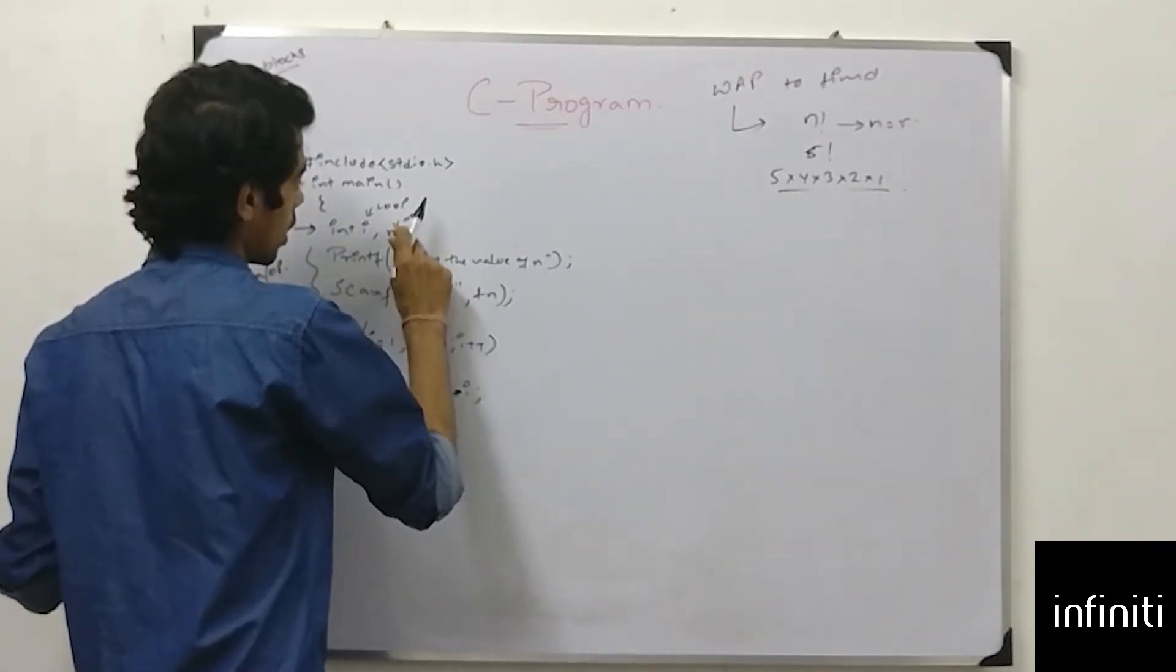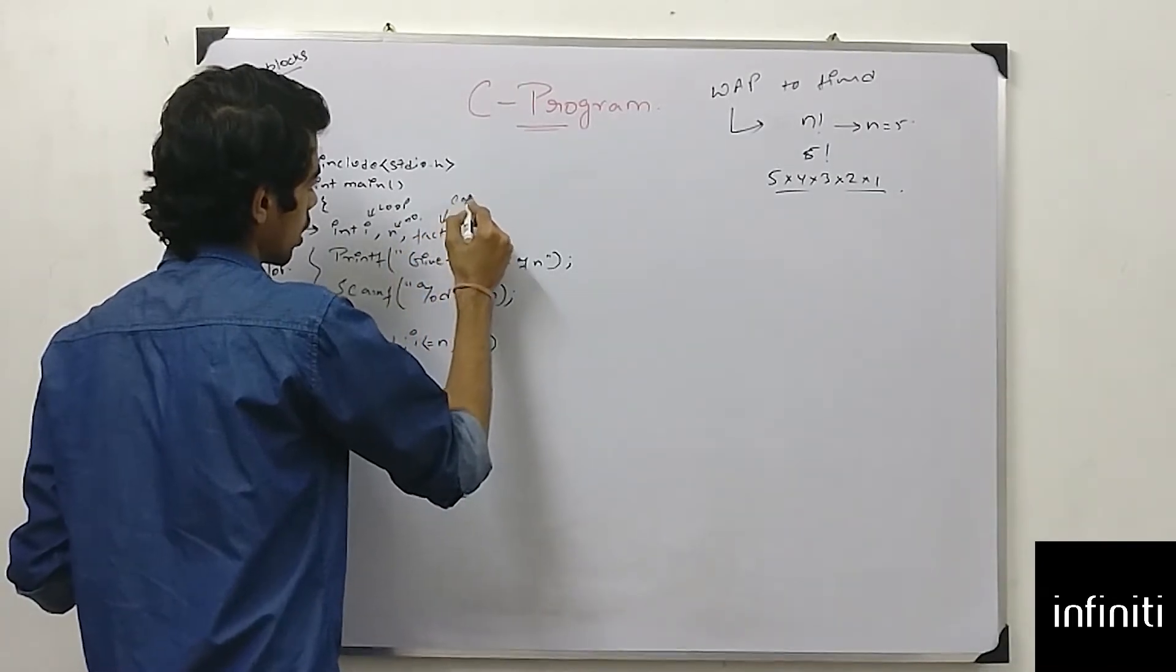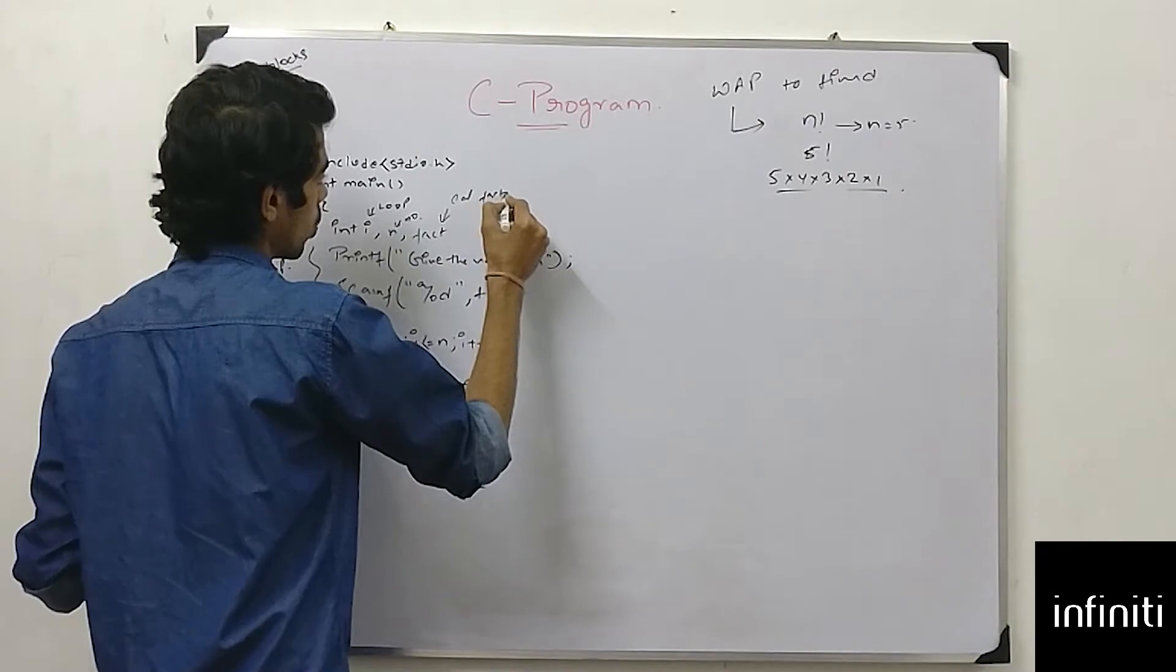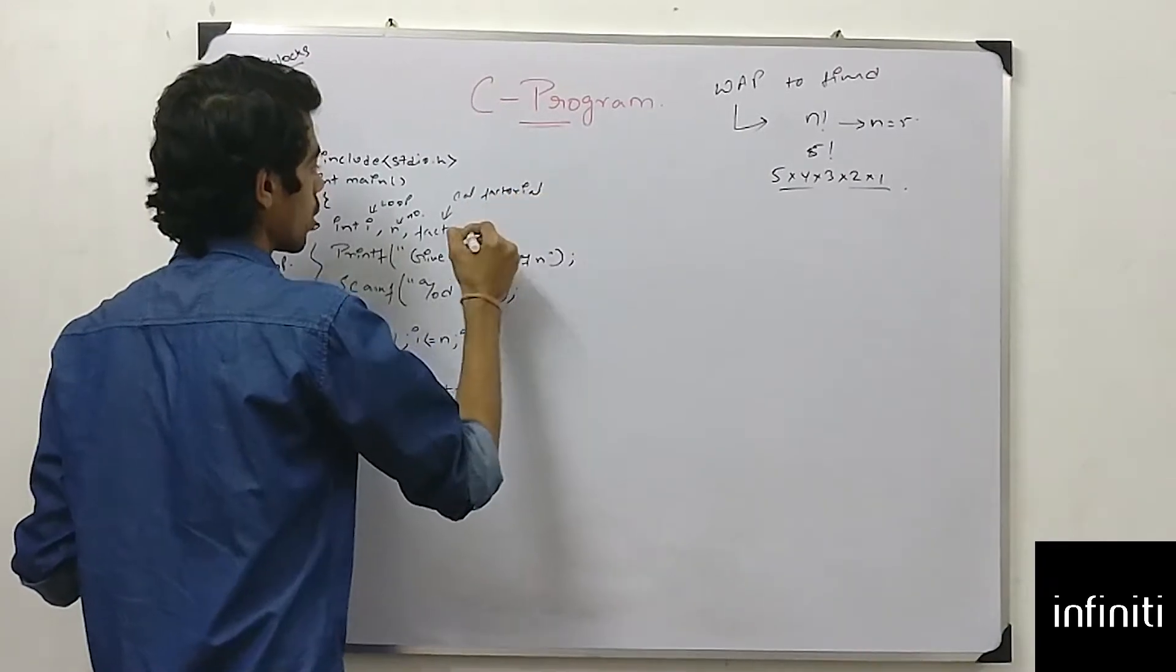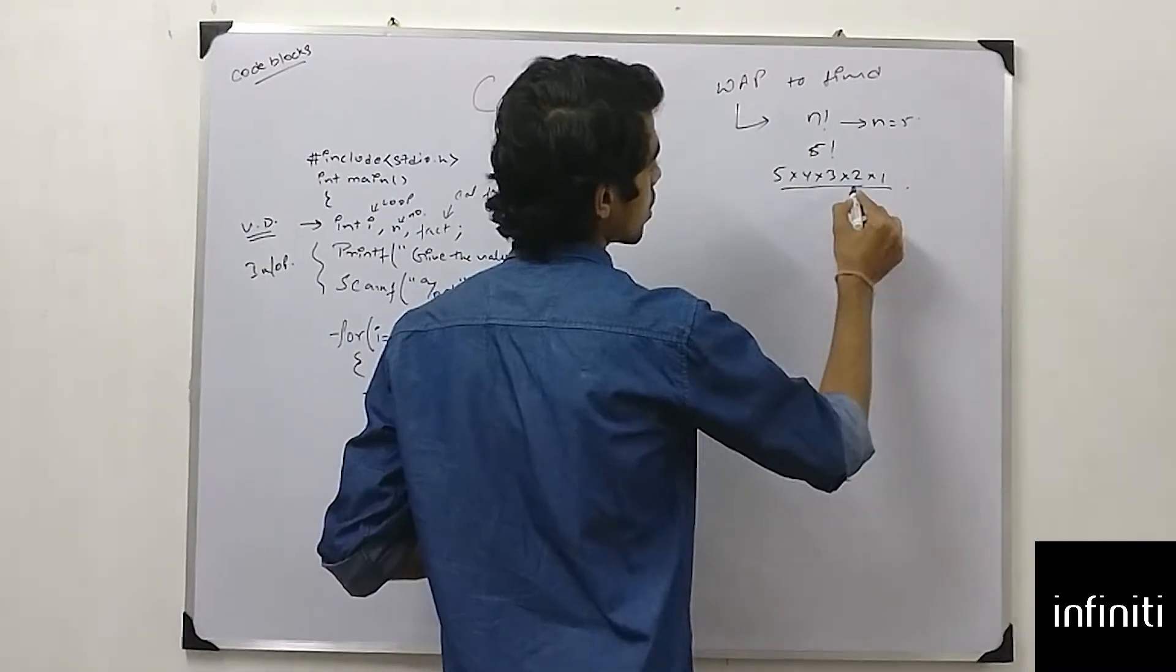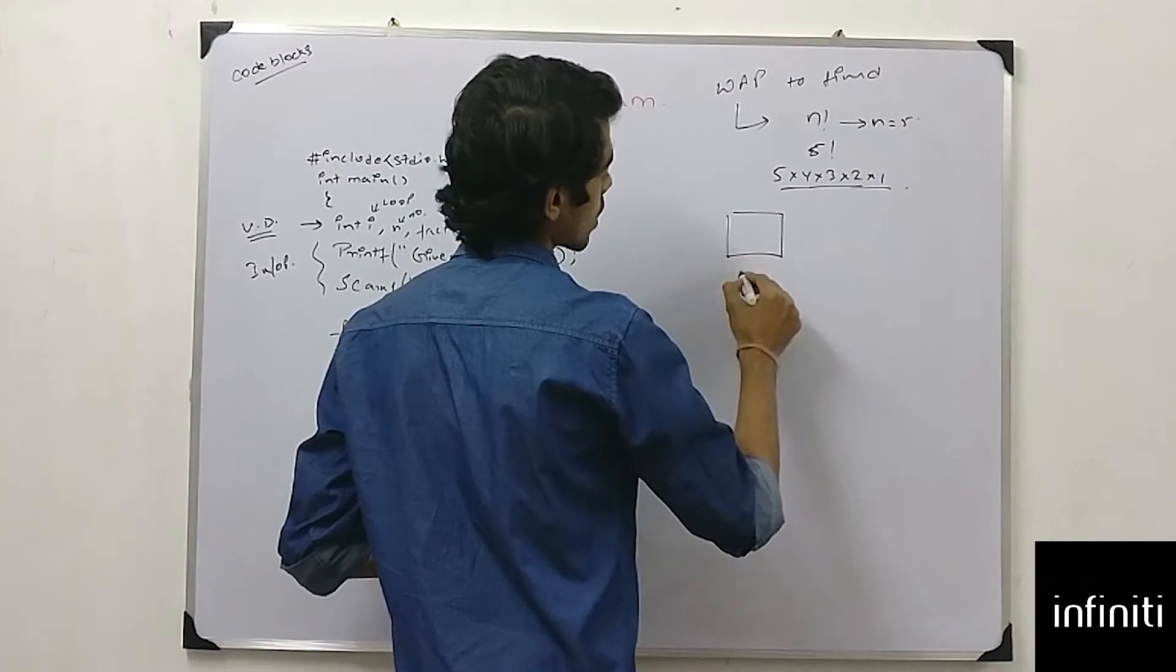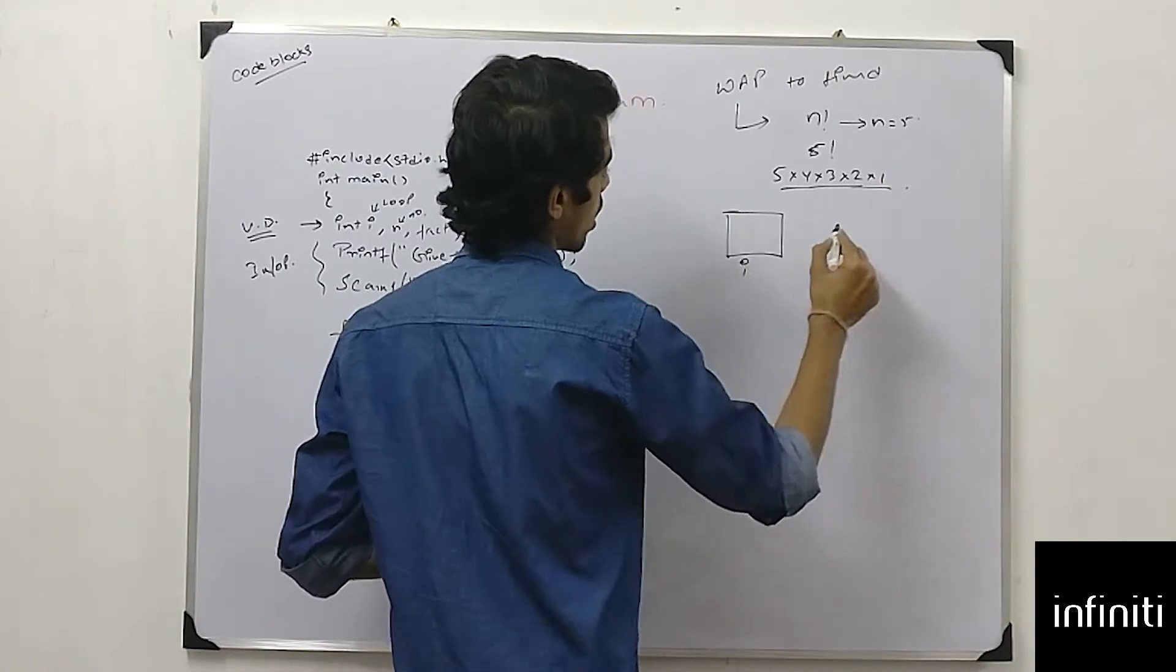And I will define a factorial variable which will calculate the factorial. So what this fact will do? Fact will just multiply with i.